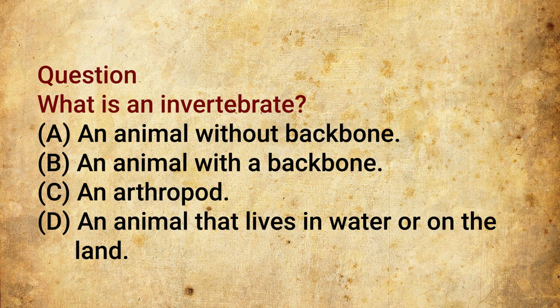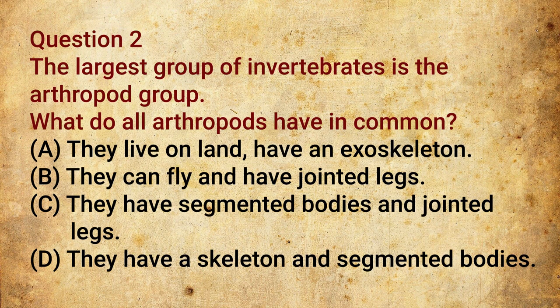Question one: What is an invertebrate? Is it an animal without a backbone? Is it an animal with a backbone? Is it an arthropod? Or is it an animal that lives in water or on land? Question two: The largest group of invertebrates is the arthropod. They live on land; they have an exoskeleton; they can fly; they have jointed legs; or they have segmented bodies and jointed legs.